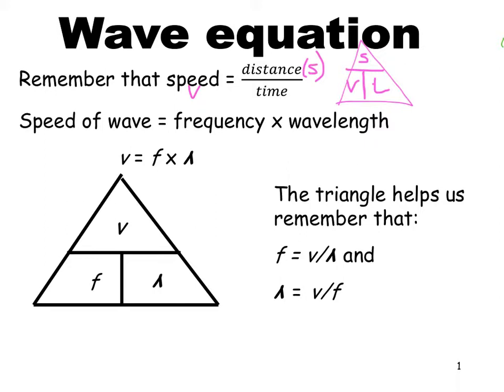With waves, the other equation that you might have to use is speed is equal to the frequency times the wavelength. So V equals lambda F, or F lambda, and that triangle helps us to derive that if we want the frequency, we're left with the speed over the wavelength. If we want the wavelength, we're left with the speed over the frequency.